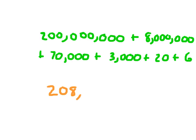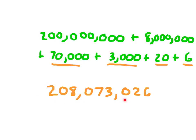Next I look at the thousands period. I have two numbers: it's just 73,000, and the way I write 73,000 is as 073, because there are no 100,000s in this number. Finally I have 26 — how would I write 26 as the last part of my number? I write it as 026. Each period has three digits, so the number is 208,073,026, where each digit corresponds to its value.